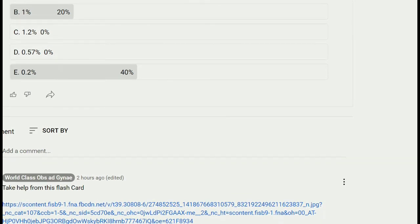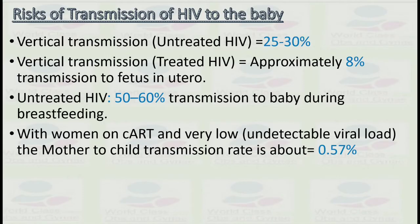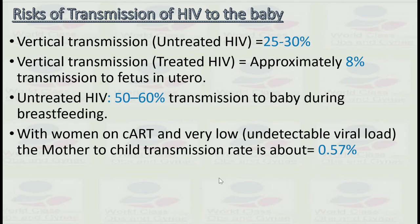The risk of transmission of HIV to the baby — vertical transmission — in untreated HIV is 25 to 30 percent. In treated HIV, approximately 8 percent. Risk of transmission to the fetus in utero in untreated HIV is 50 to 60 percent for transmission to the baby during breastfeeding. With women on cART and low or undetectable viral load, the mother-to-child transmission rate is about 0.5 percent.